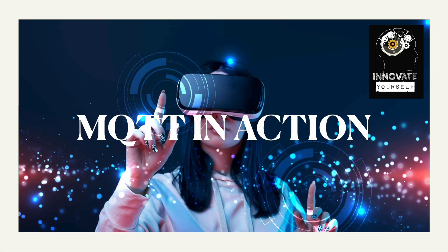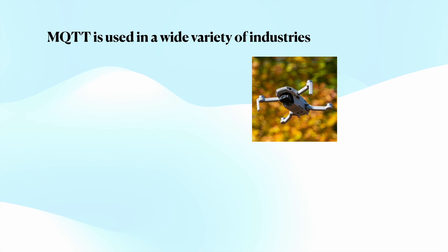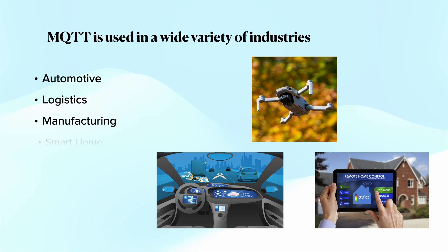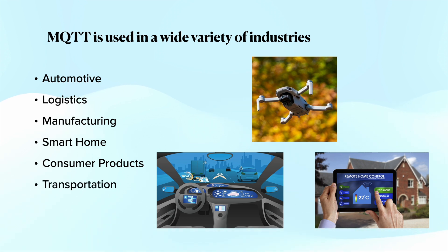Now, MQTT in action — where exactly is it being used? MQTT is used in a wide variety of industries: Automotives, Logistics, Manufacturing, Smart Home, Consumer Products, Transportation, and Oil and Gas. These are the industries in which you can use MQTT for safer and two-way communication with its lightweight feature.